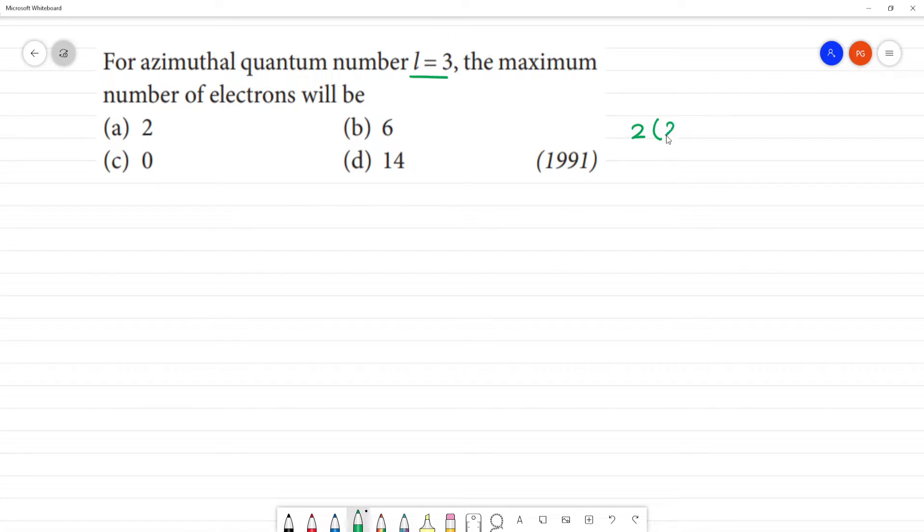The maximum number of electrons is calculated using the formula 2 times (2L plus 1). That is 2 times (2 times 3) plus 1, where L is 3. This equals 2 times (6 plus 1), which is 2 times 7, that is 14 electrons. Clear?